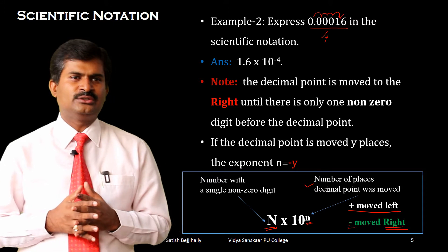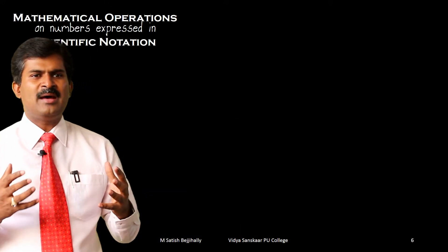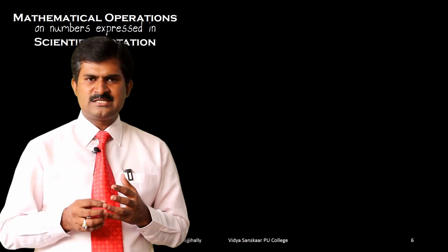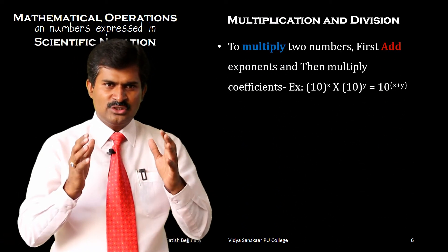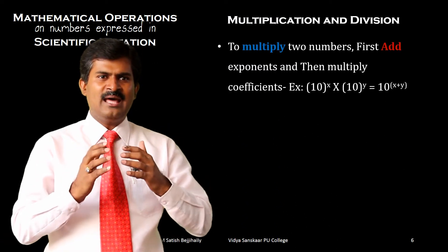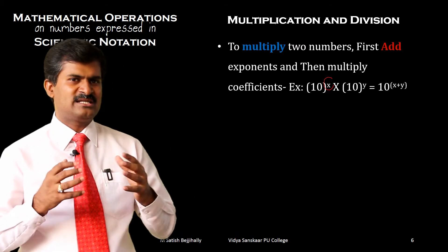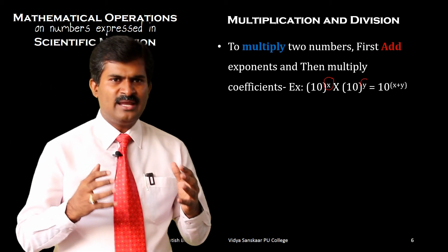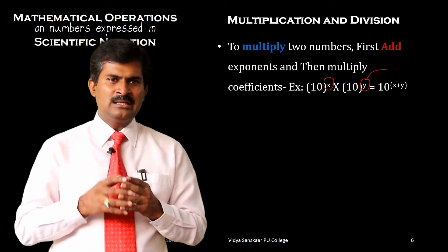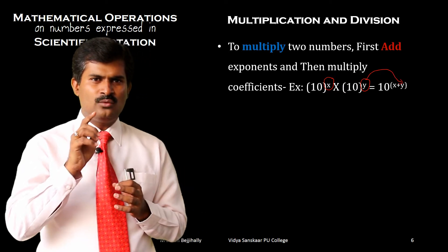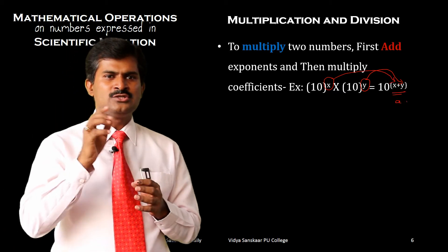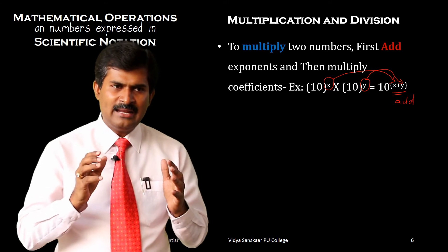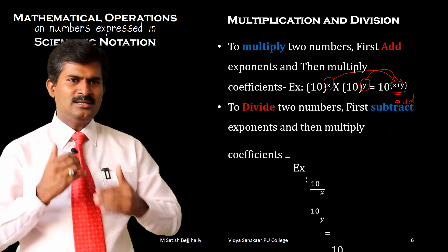Now let us see how scientific notation can be used in mathematical operations: addition, subtraction, multiplication, or division. To multiply two numbers, first add the exponents, then multiply the coefficients. For example, 10 to the power of x multiplied by 10 to the power of y: the exponents are x and y, so the result is 10 to the power of x plus y.